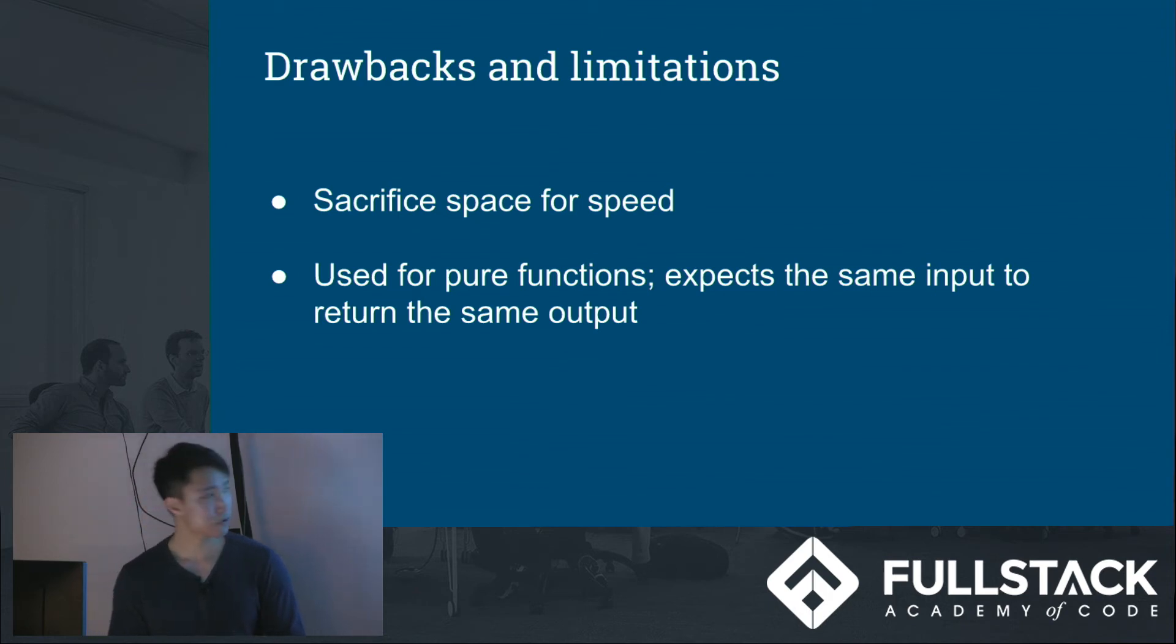And depending on what you need from your program, you might not be able to afford that sacrifice. And it's used for primarily pure functions, where you expect the same input to return the same output. If you're getting a function where you pass in parameters that have the same input but it's giving different outputs, you probably can't use memoization for that. Because when you look up the table, it doesn't make sense. It could be a different value. It has to be the same value.